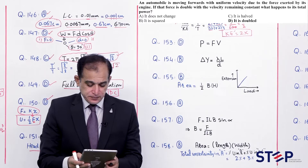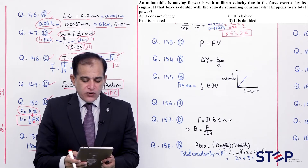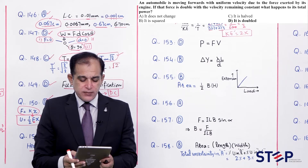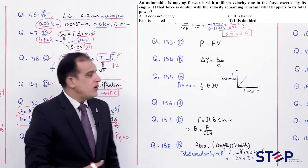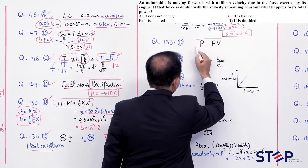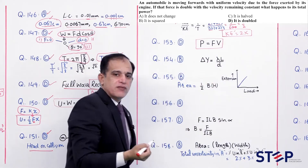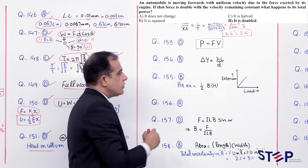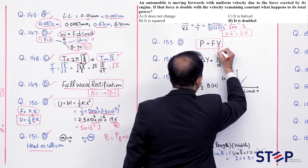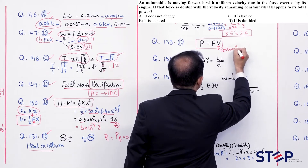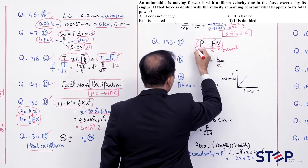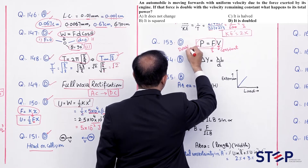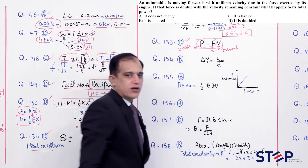Question number 153: Automobile moving with uniform velocity due to engine force. If force is doubled with velocity constant, what happens to power? P = F·v. Force aur power mein direct relation hai. Force double hogi toh power bhi double hogi. Correct option: Delta.